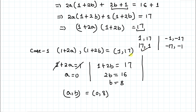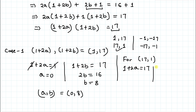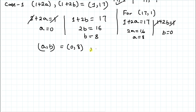For the pair 17 comma 1 we will get just the vice versa answer. So 1 plus 2a equals to 17 and 1 plus 2b equals to 1. The 1s cancel out, giving us b equals to 0, and 2a equals to 16, so a equals to 8. So another solution is a comma b equals to 8 comma 0.